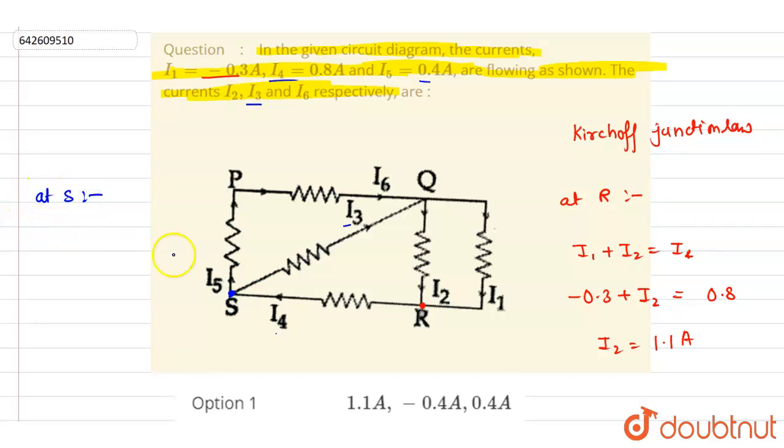At S, if you see here, the i3 and i5 are outgoing currents and i4 is the incoming one.